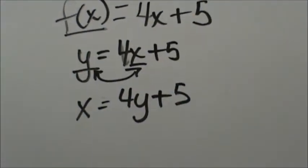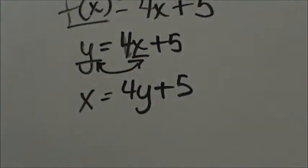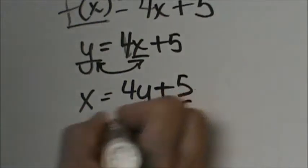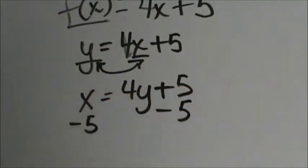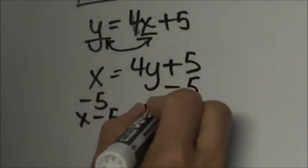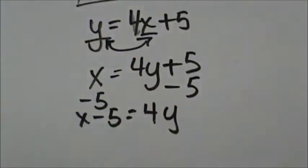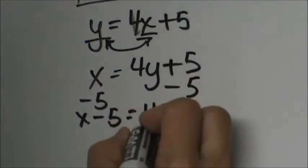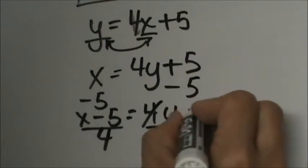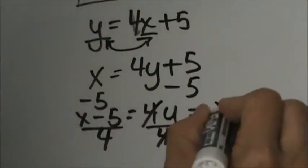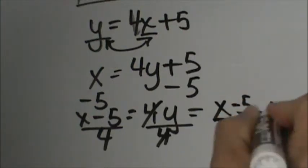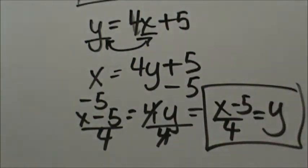Now the last step is just to solve the equation for y — get y by itself. First, subtract 5 from both sides, so you get x minus 5 equals 4y. Then we divide both sides by 4. So our new equation simplifies to x minus 5 over 4 equals y. That would be the inverse function.